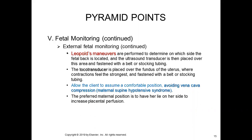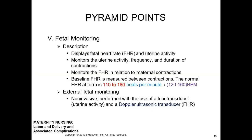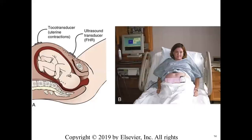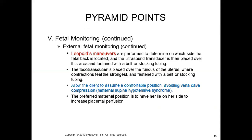When performing fetal assessment via Leopold maneuver, the expected findings for fetal heart rate: we count the fetal heart rate — normally 120 to 160 beats per minute. We can also check moderate variability, and check for acceleration or deceleration — present or absent — and verify there are no variable or late decelerations.